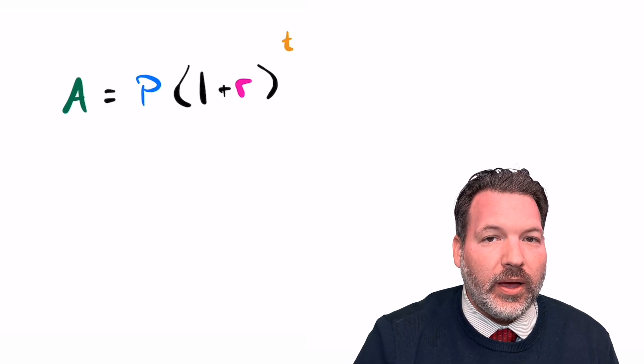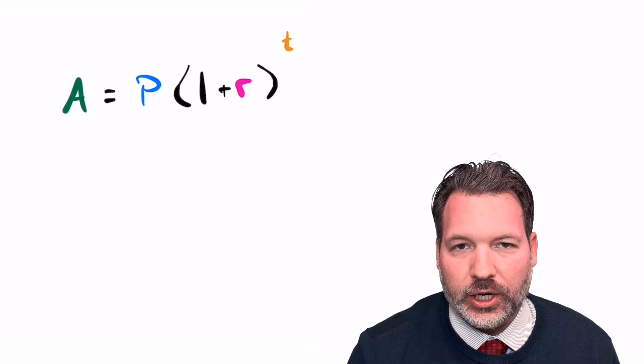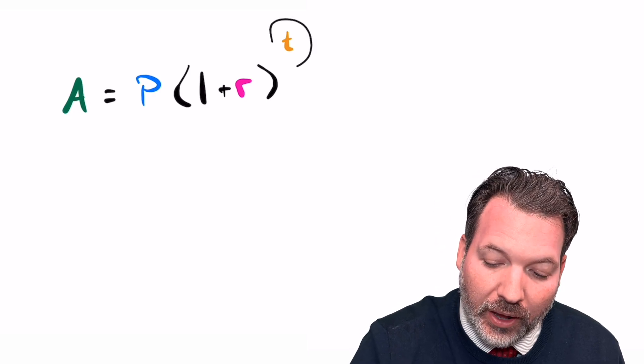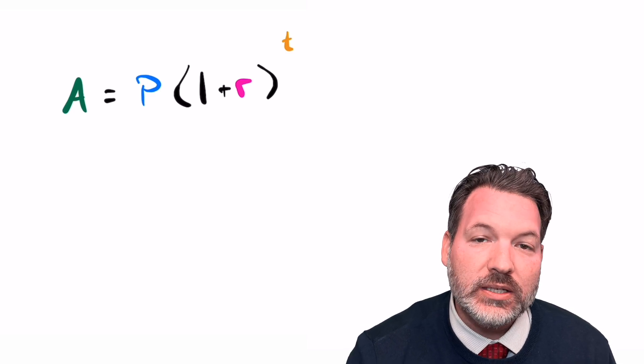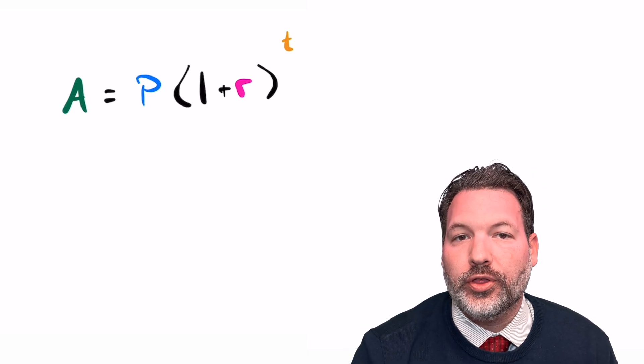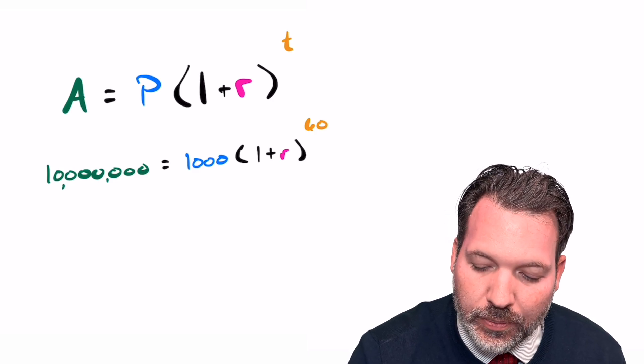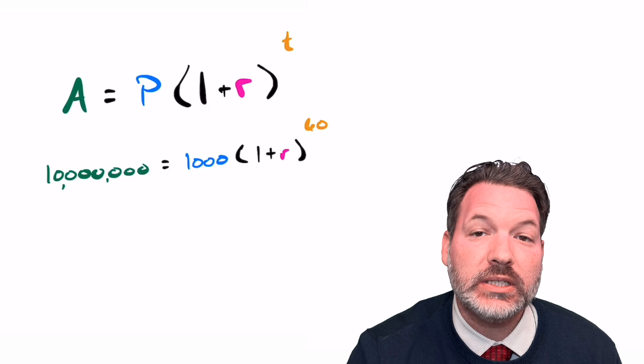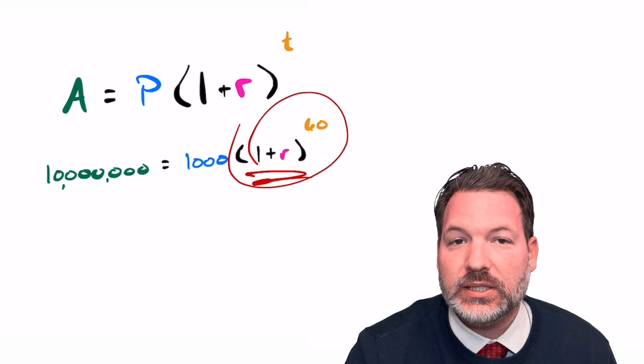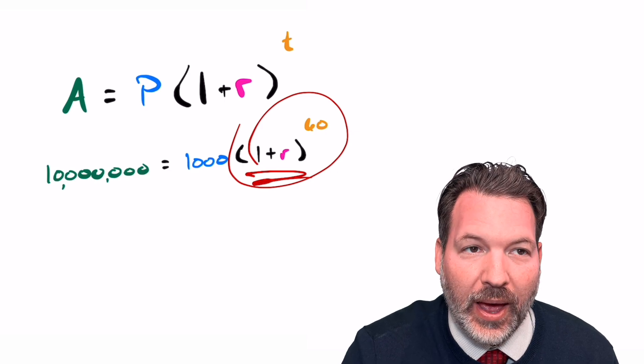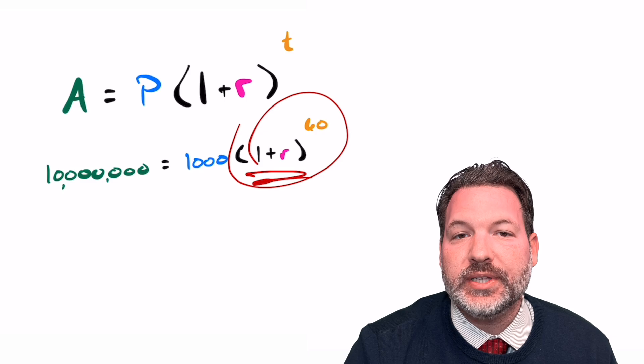Because we know the starting amount was $1,000 and the ending amount is over $10 million, which we're just going to call $10 million, and we know the amount of time, roughly 60 years, we can actually plug those values into this equation and come back with the growth rate. What that equation looks like after we plug in our numbers is 10 million equals 1,000 times 1 plus R to the 60th power. And again, obviously, it's the 1 plus R to the 60th power that's doing the work of turning our $1,000 into $10 million.